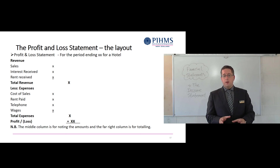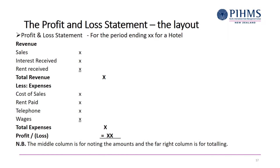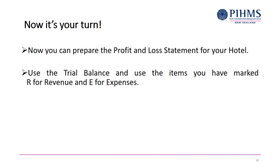The profit and loss statement, or income statement, is the first financial statement you have to prepare — you'll see why when we move to the balance sheet next. For the example we've been working on, prepare the income statement by using the trial balance and grabbing all items marked R for revenue and E for expenses.